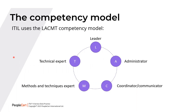We begin with understanding briefly the competency model within ITIL. ITIL uses the LACMT competency model, described in detail in the ITIL 4 DPI — Direct Plan and Improve — certification course. L stands for Leader, A for Administrator, C for Coordinator or Communicator, M for Methods and Techniques Expert, and T for Technical Expert. You can use this competency model to create an acronym for a specific role.